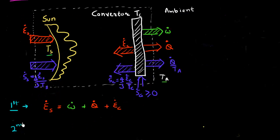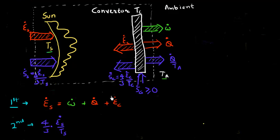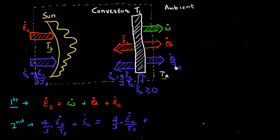Now the second law of thermodynamics essentially relates these fluxes of entropy. I can write the incoming flux — which is the incoming flux due to the energy of the sun and has a factor of 4/3 — plus the entropy which was generated in this conversion. That is going to be equal to the entropy associated with this black body radiation coming from the cell, which is related to the energy flux of the radiation from the cell divided by the temperature of the cell, with a factor of 4/3 because there's a radiative process. Then I add the entropy flux associated with this heat which was given out.